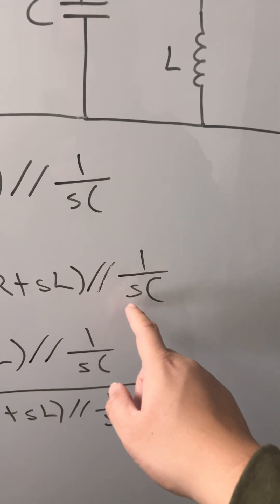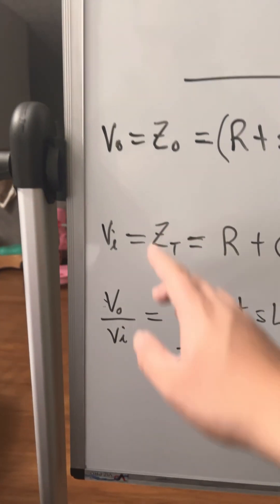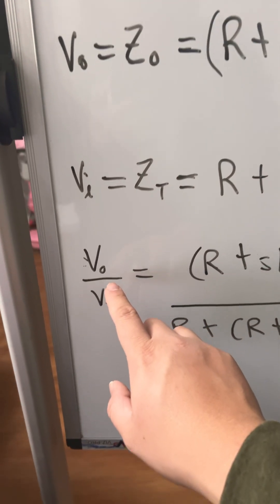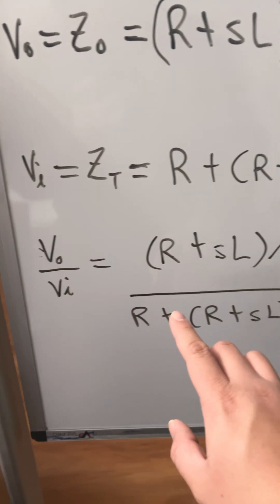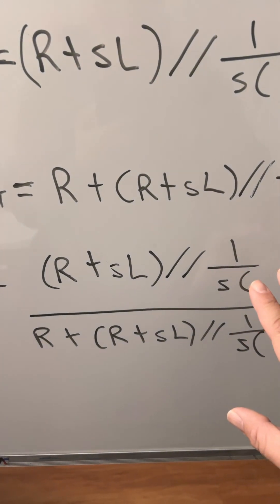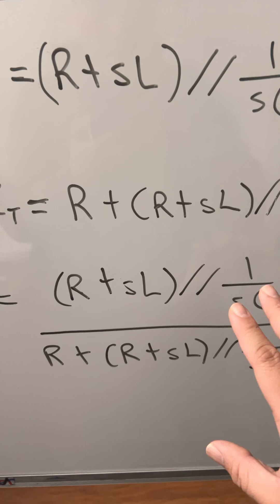So now we will just use this to calculate V output divided by V input, and we will get this calculation, this equation. Thank you.